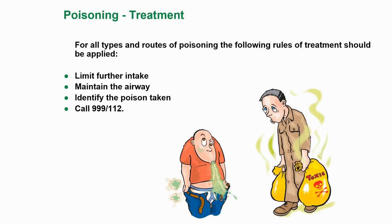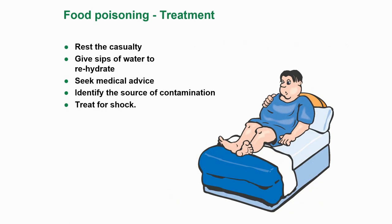Poisoning — the treatment for all types and routes of poisoning: the following rules of treatment should be applied. Limit further intake, maintain the airway, identify the poison taken if possible, and call the emergency services. Food poisoning treatment: rest the casualty, give sips of water to rehydrate, seek medical advice, identify the source of contamination, and also treat for shock.